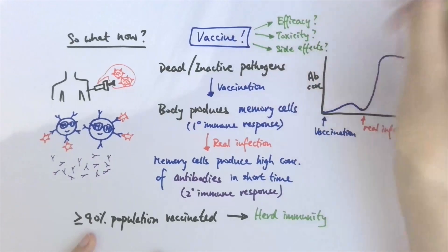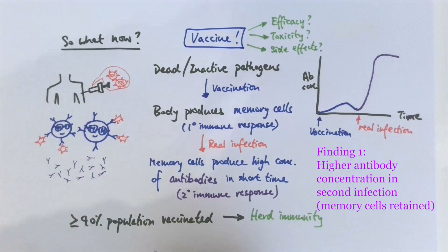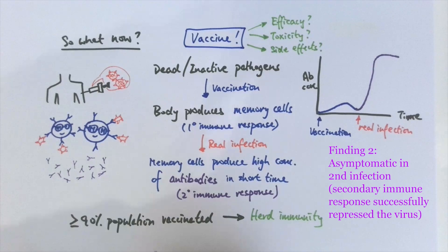Recently, there has been the first report of a man who was reinfected after completely recovering from COVID. This is a really interesting discovery with many promising findings. They found higher concentrations of antibodies in his bloodstream during the second infection, implying that memory cells from his first exposure to the virus were retained. Another important finding is that he was asymptomatic the second time around, meaning the virus was unable to make him sick upon reinfection, possibly due to the faster secondary immune response.